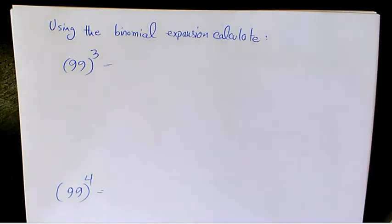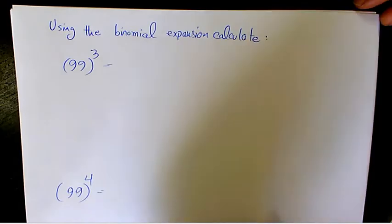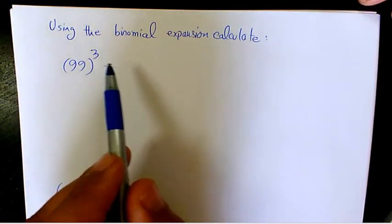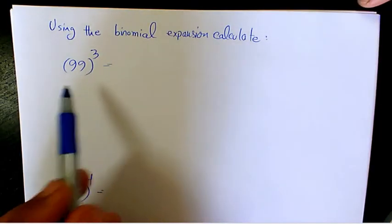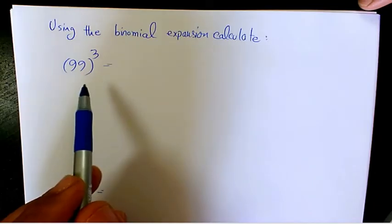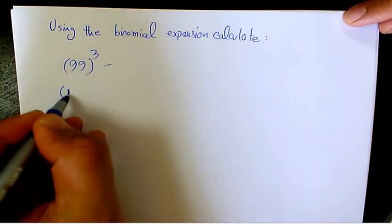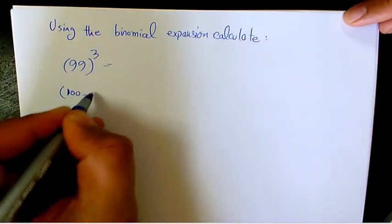What's up guys, this is Massey, welcome to another video. In this video I want to show you how to calculate 99 to the power of 3 and 99 to the power of 4 using binomial expansion. For the first one, 99 to the power of 3, instead of writing 99 directly, I'm going to rewrite it as 100 minus 1 to the power of 3.